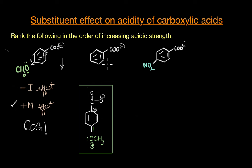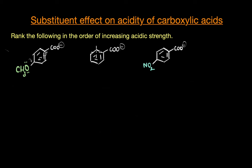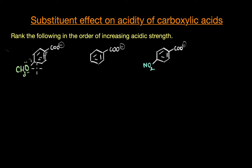Benzoic acid has no substituents to influence its stability. We can safely say it will be more acidic than methoxybenzoic acid, since its conjugate base is more stable than when an electron donating substituent like a methoxy group is attached.